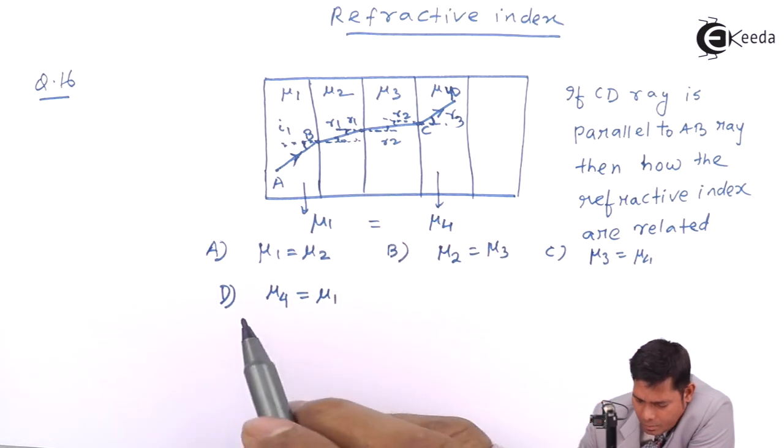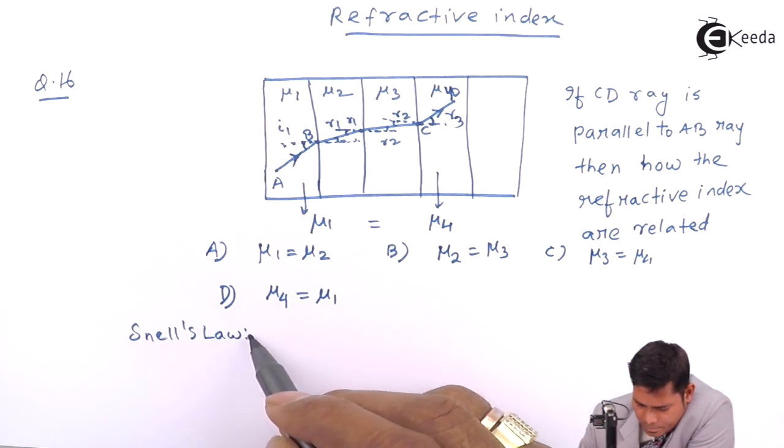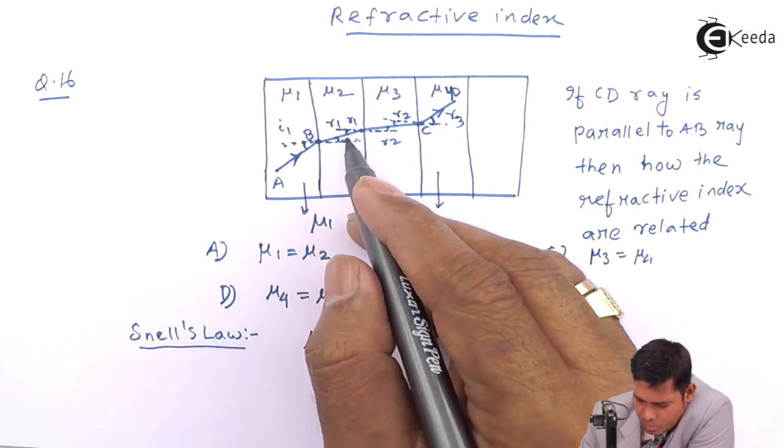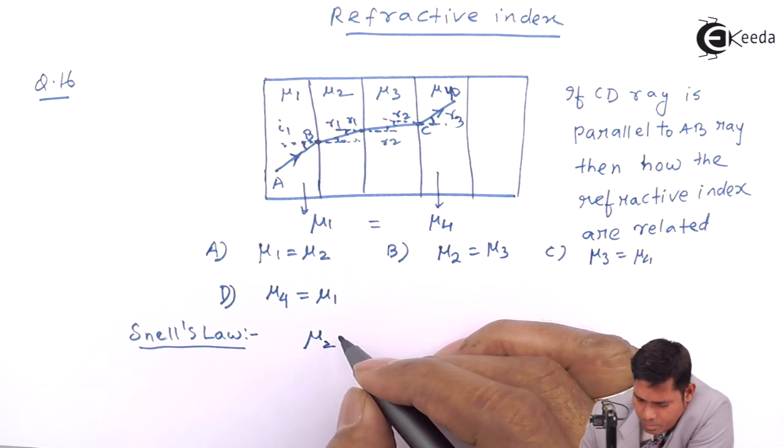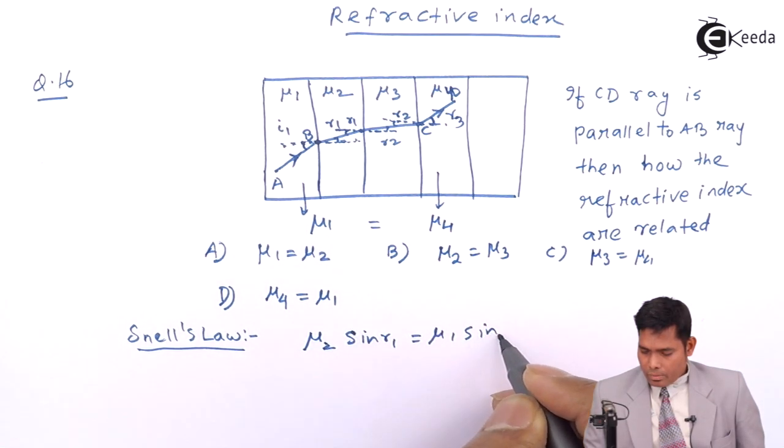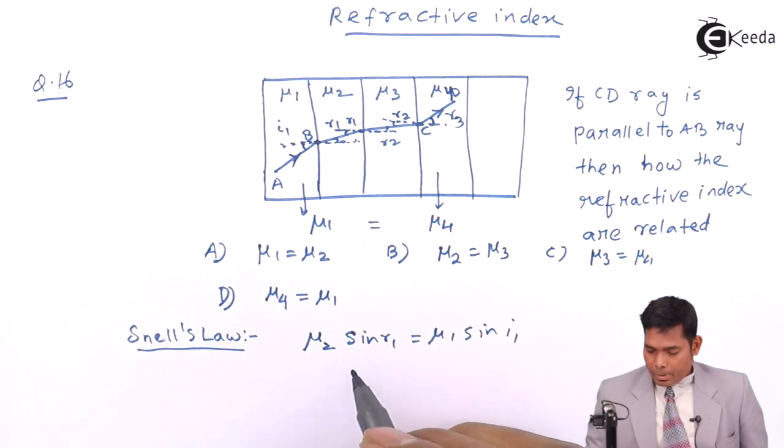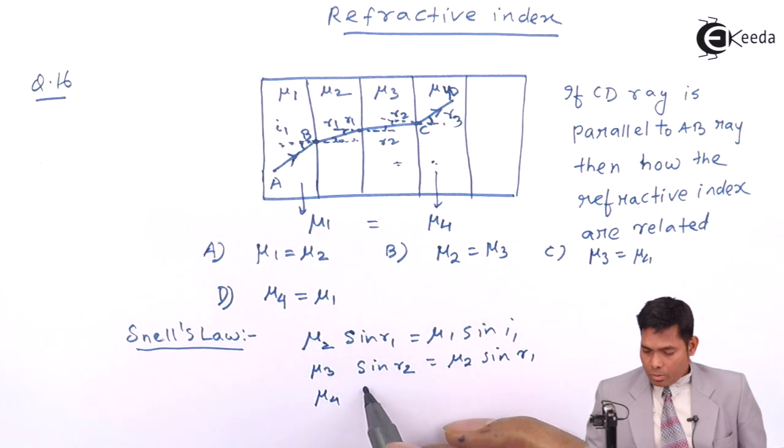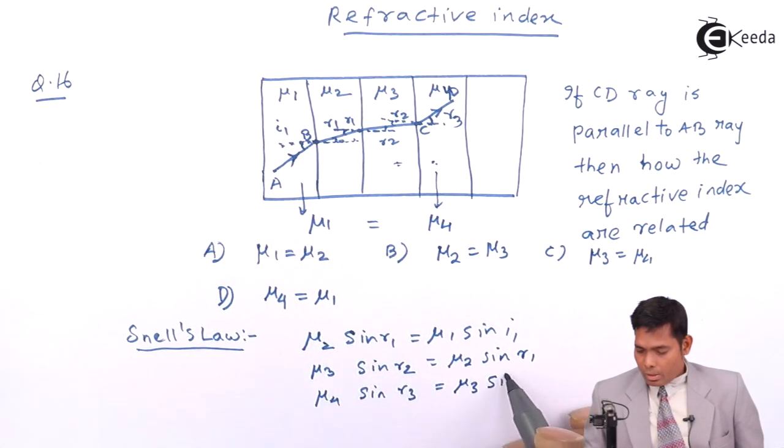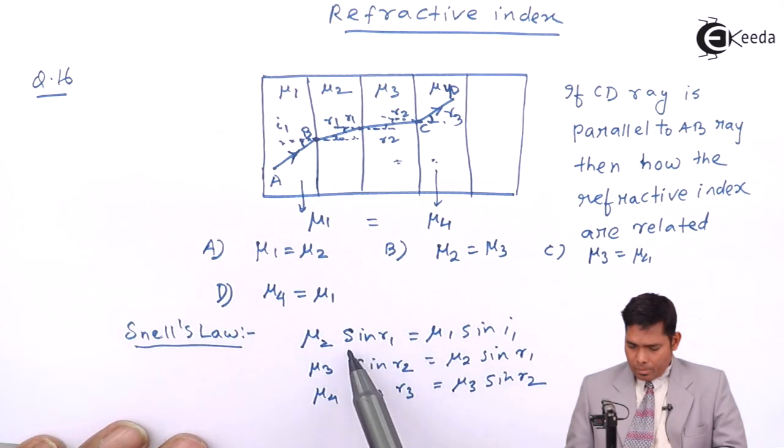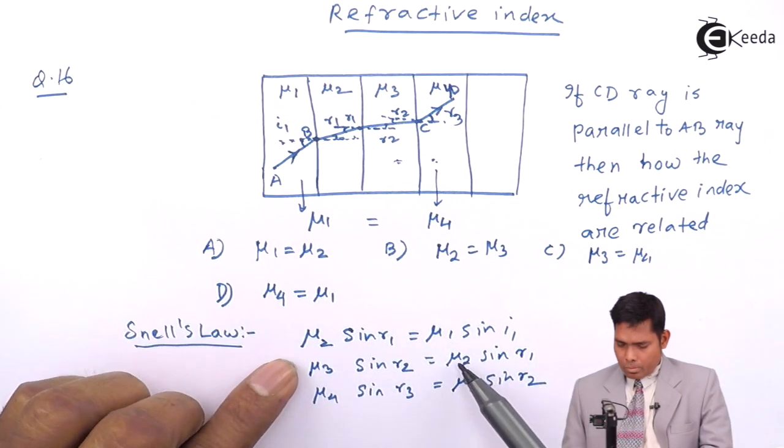Let's now from Snell's law, we have at this point mu2 into sine of r1 equals to mu1 into sine of i1. In this second case, for these two pair of media, we have mu3 sine of r2 equals to mu2 sine of r1. Now, you can see that mu2 sine of r1 and here also mu2 sine r1.